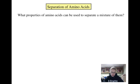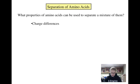Now that we have seen how amino acid structures and charges can change based on the pH of the solution they're in, we're going to talk about some different techniques that can be used to separate them from one another. We can take advantage of two characteristics as we try and separate amino acids: differences in charge and differences in the polarity of their R groups.